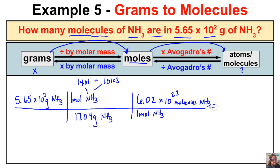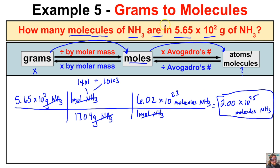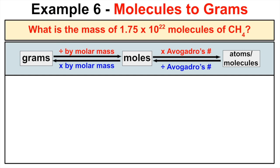We take 5.65 × 10², divide by 17.04, then multiply by Avogadro's number 6.02 × 10²³. With three significant figures, our final answer is 2.00 × 10²⁵. Moles of NH₃ on top and bottom cancel; grams of NH₃ on top and bottom cancel, leaving us with molecules of NH₃, which is what we were asked to find. There are 2.00 × 10²⁵ molecules of NH₃ in 5.65 × 10² grams of NH₃.